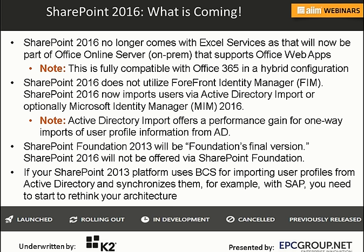SharePoint 2016 no longer comes with Excel Services — that's now part of Office Online Server for on-prem, which supports Office web apps. This is fully compatible with an Office 365 hybrid configuration. You can't upgrade directly from 2013 to 2016 Excel Services; you'll need to implement an Office Online Server component to make that compatible.